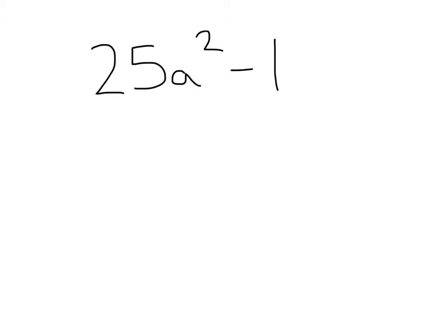How about this one here? 25a squared minus 1. All right, a little more complicated, but we got this. First, let's break this first part up. 25, we know is 5 squared, and then we've also got the a. So I'm going to change this 25a squared to 5a squared. That's 5a times 5a, 25a squared. Perfect.